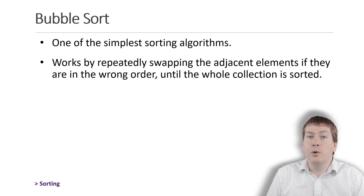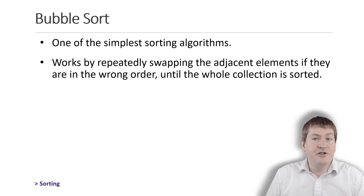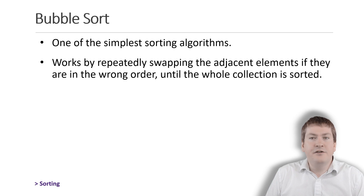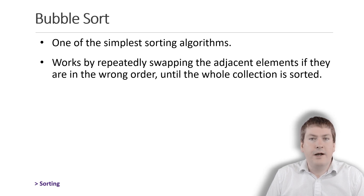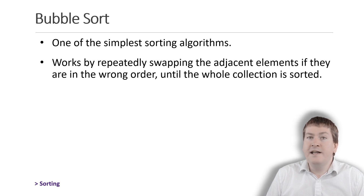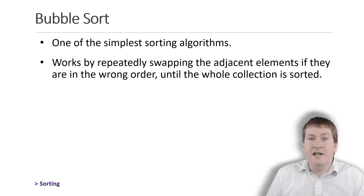Bubble sort works by repeatedly iterating through a list of values and swapping adjacent elements if they're in the wrong order. This is repeated until no more swaps are required and the list is in the correct order. Effectively, we're finding and placing the largest value at the end of the list each iteration through the list.